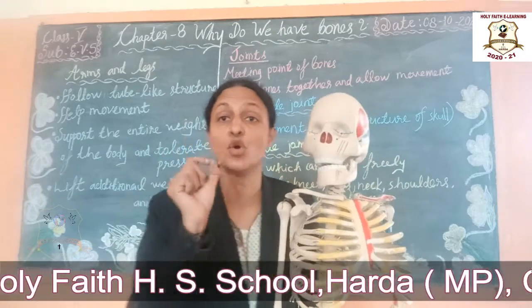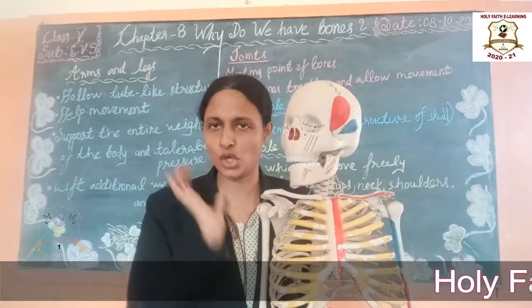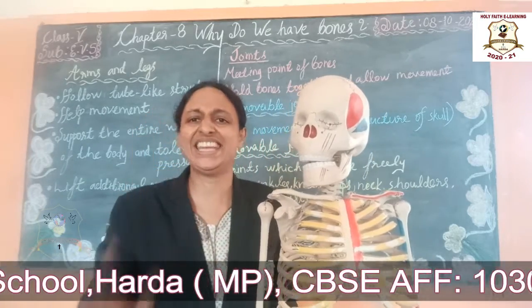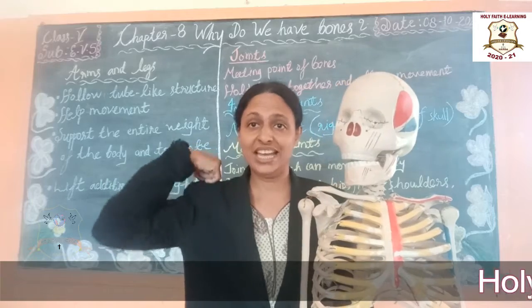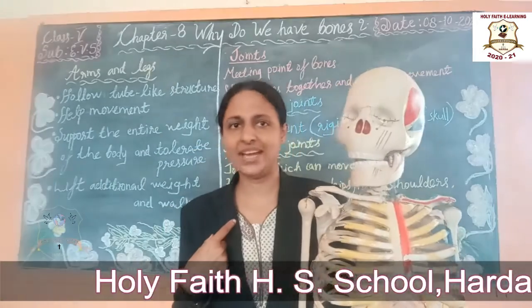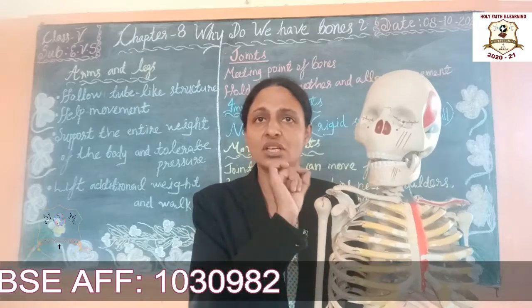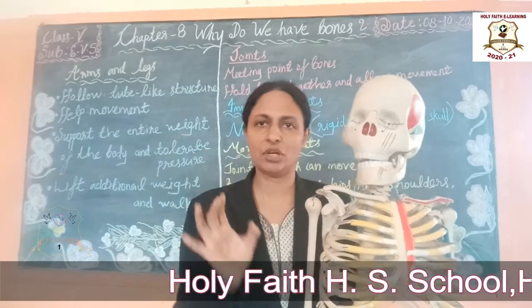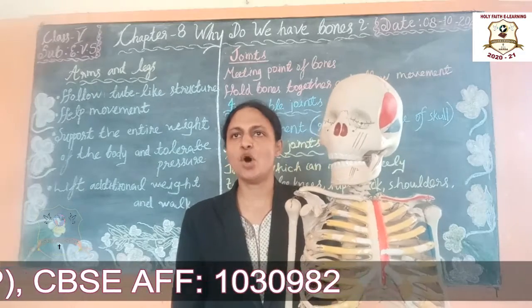Joints which can move freely. Now, the ball and socket joint. This type of joint allows movement in any direction. We can move the hand in any direction because of the shoulder's ball and socket joint. You can read page numbers 2.16 and 2.17 — there is a diagram of the human skeleton with labeled joints. Draw the diagram and color it to understand the joints better.